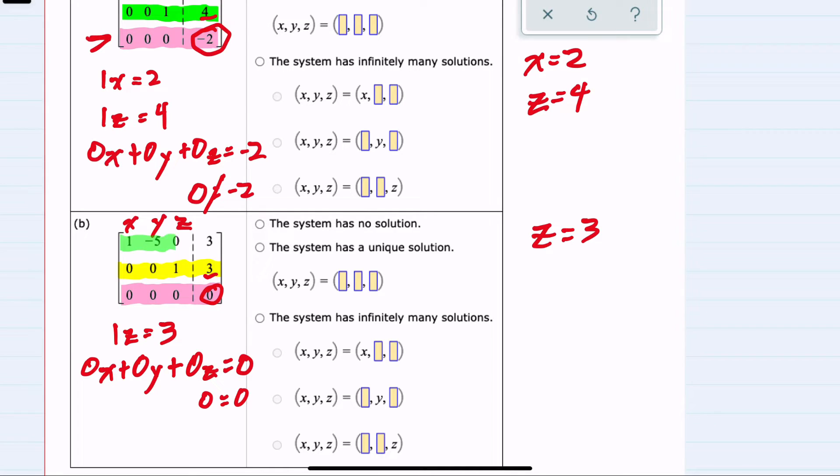For that, we'll move to this first row, translating this back into the equation. The 1 is in the x column. So 1x, then minus 5 is in the y column. There's a 0 in the z column and a 3 on the other side. So we do have an equation here relating x and y.